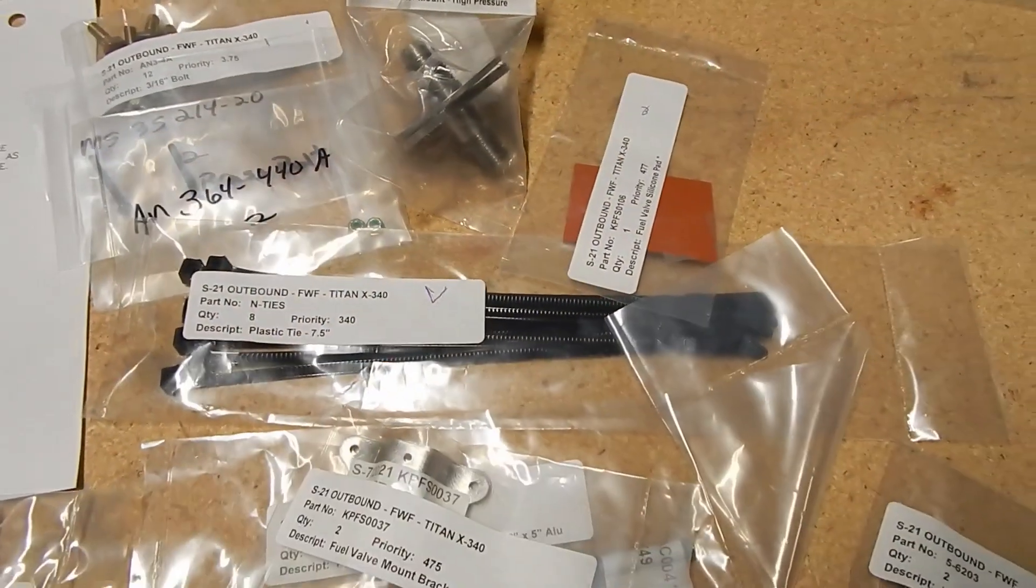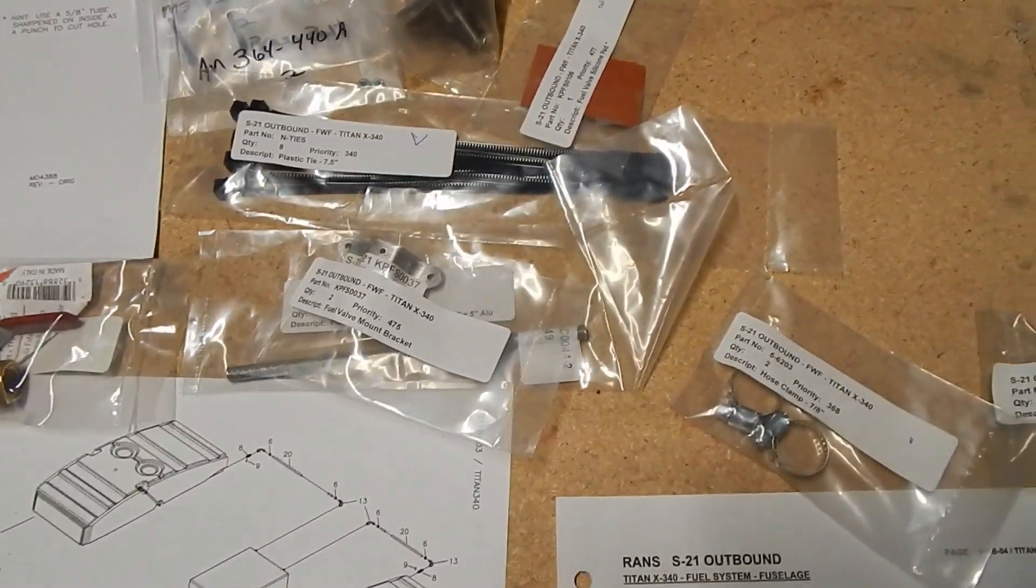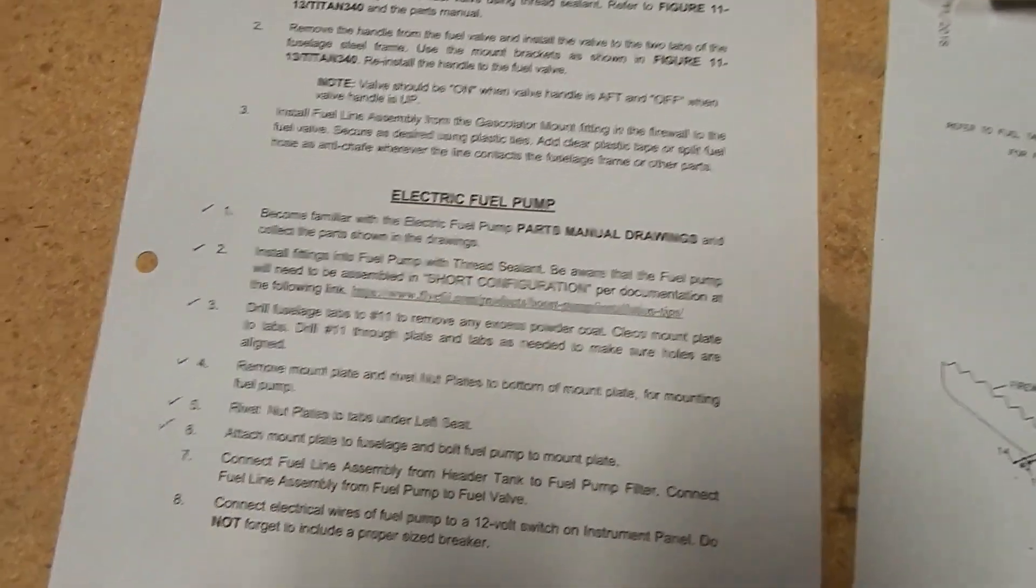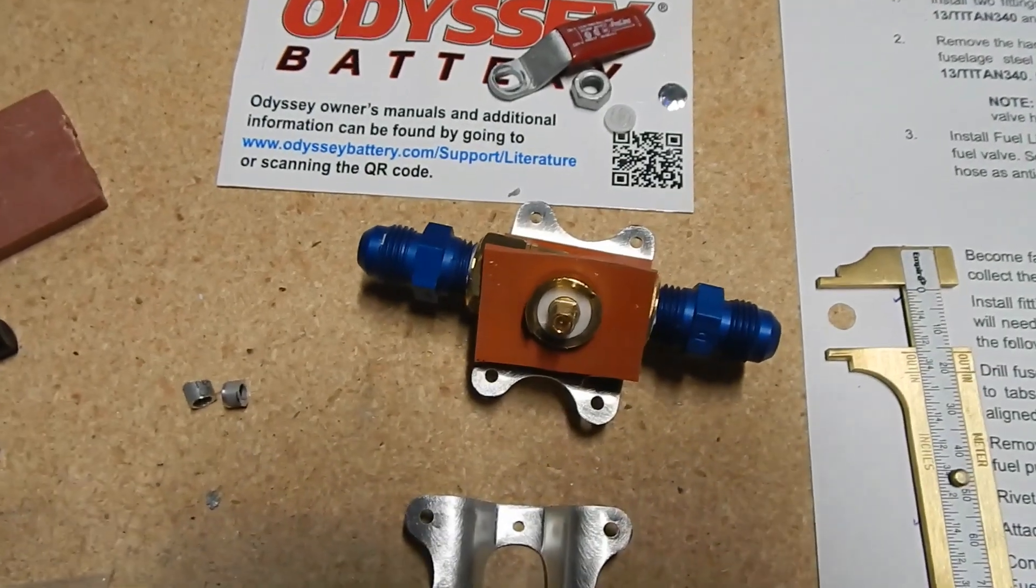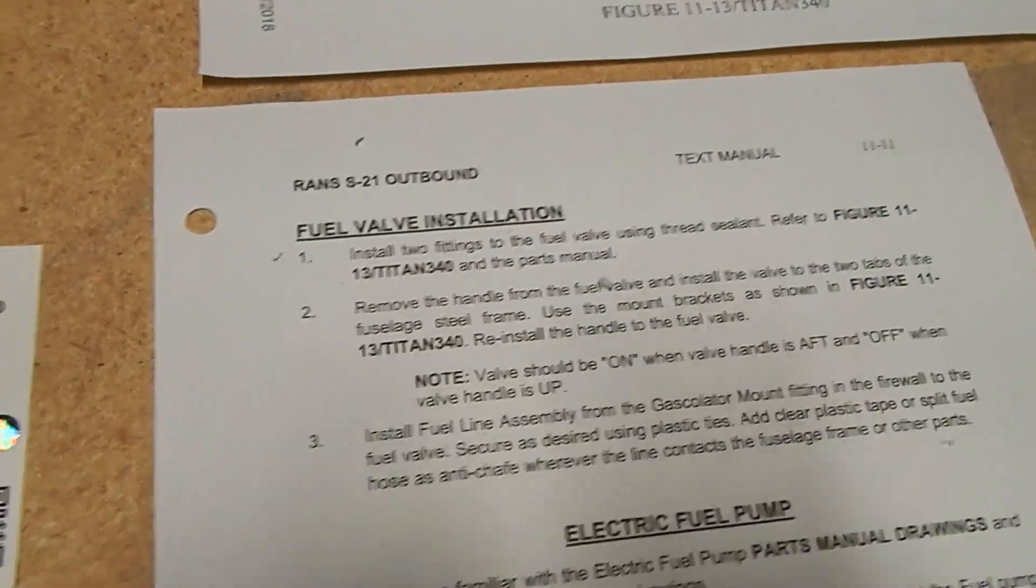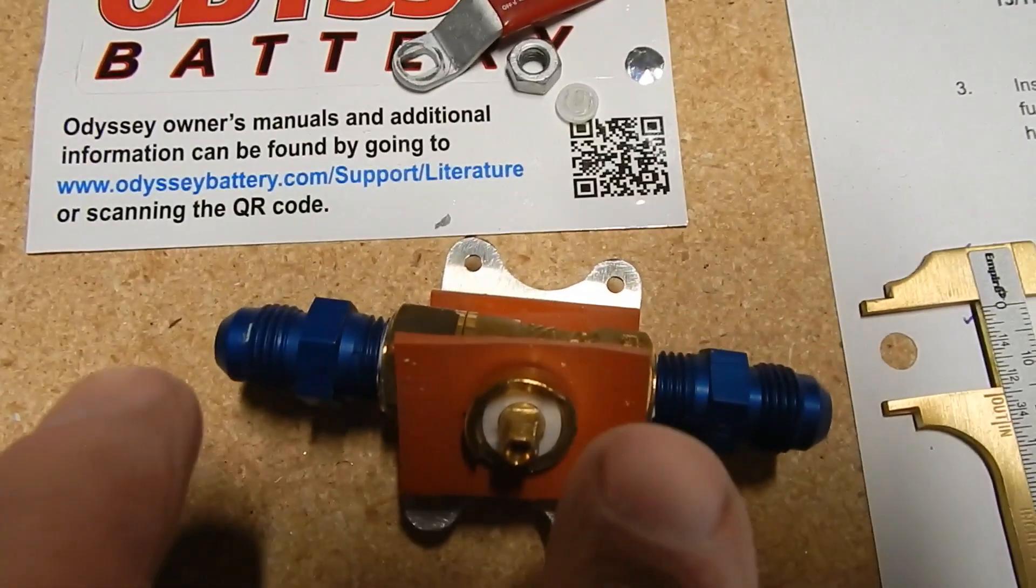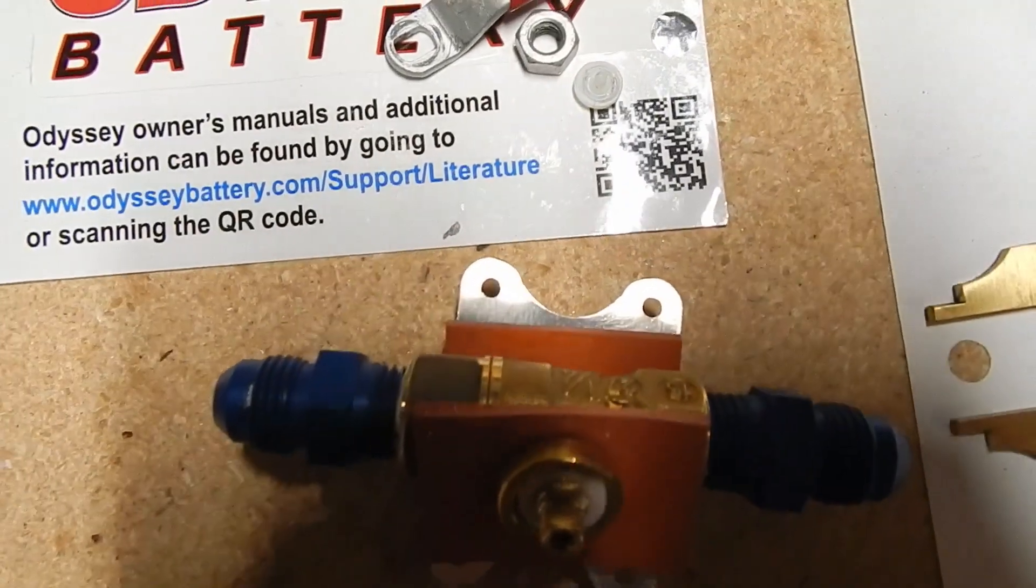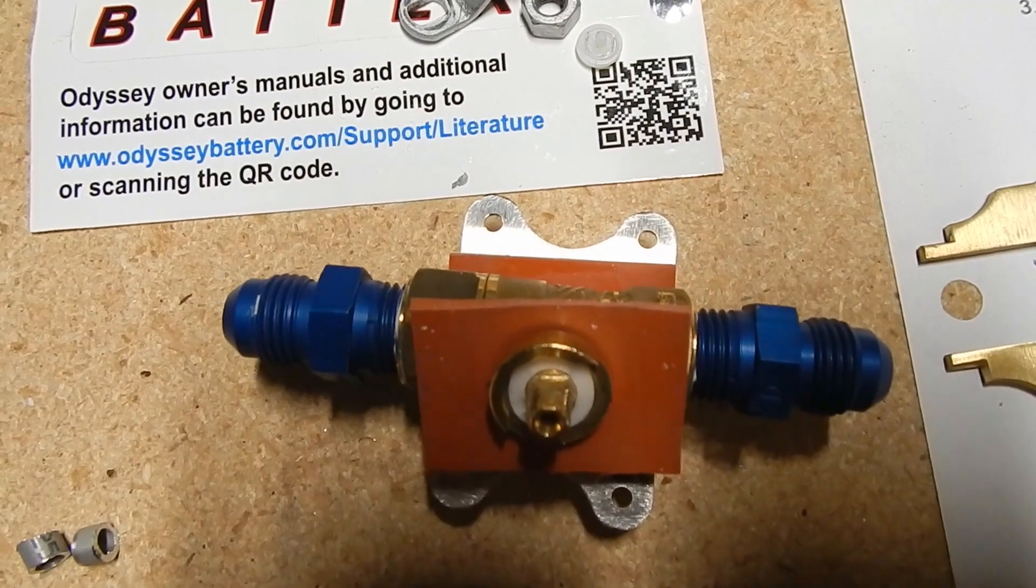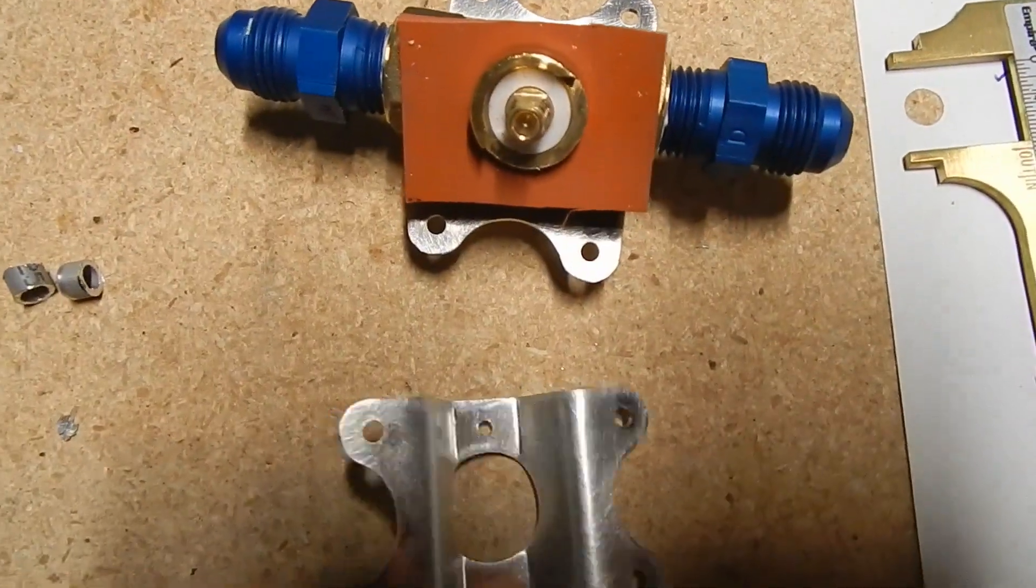There's a diagram here, there's a figure, parts are in the firewall forward section. Get the parts out and start assembling. First thing is we just start putting the fittings together. You start with the fuel valve installation by getting some fittings attached into the fuel valve with some sealant, some thread sealant. Don't forget to use the gas appropriate sealant.